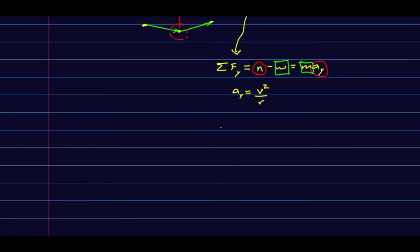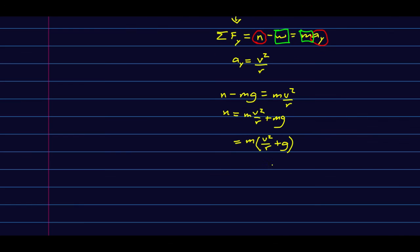And so we're practically done. N minus the weight, which I might as well write as mg, is m v squared over r. And so n is just m v squared over r plus mg. But you could write this way. It's a little simpler. And we'll talk more about this next lecture.